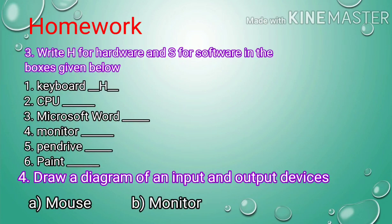The last one is your homework. Question number 9: Write H for hardware and S for software in the boxes given below. Number 1: Keyboard, Number 2: CPU, Number 3: Microsoft Word, Number 4: Monitor, Number 5: Pen drive, Number 6: Paint. Let me give you one example — Number 1: Keyboard. What is it? It is hardware.